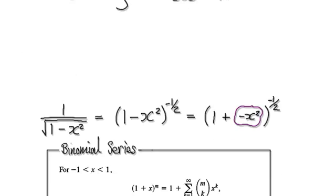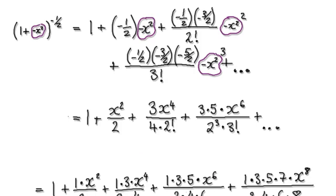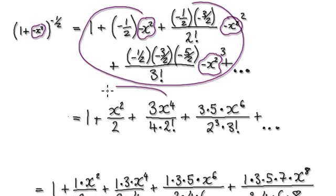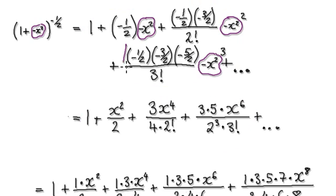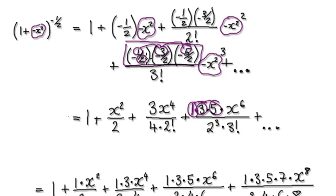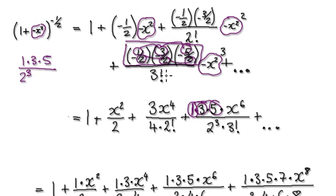Following on from the previous video, we got to this stage where, if you tidy this up, it will give you this. If you look at this bit here, it will be top times top times top, so that will give you 1 times 3 times 5, and at the bottom it will be 2 times 2 times 2. At the top it will be 3 times this thing here, and at the bottom it will be 2 to the power of 3. But then you've got to divide by this thing here — divide by 3 factorial — so this gets multiplied to the bottom, giving 3 factorial.